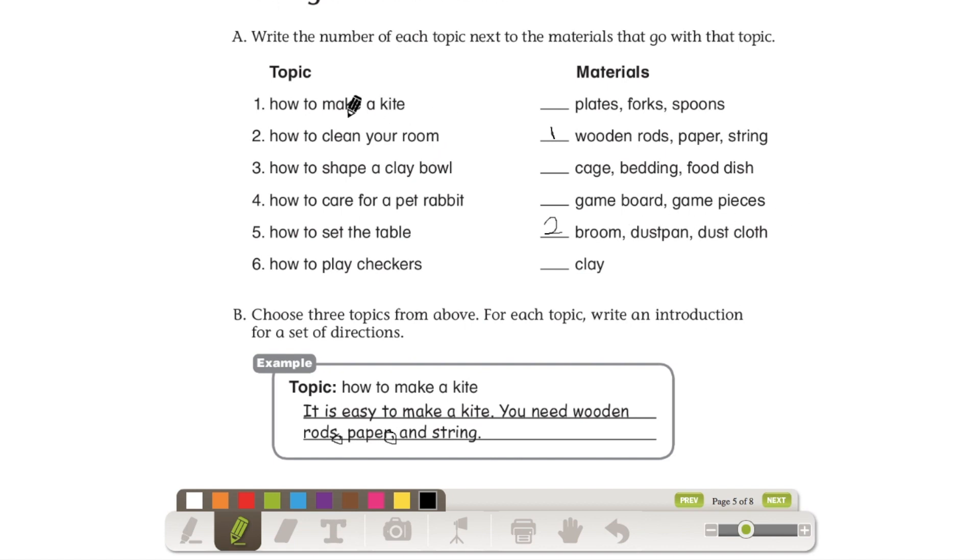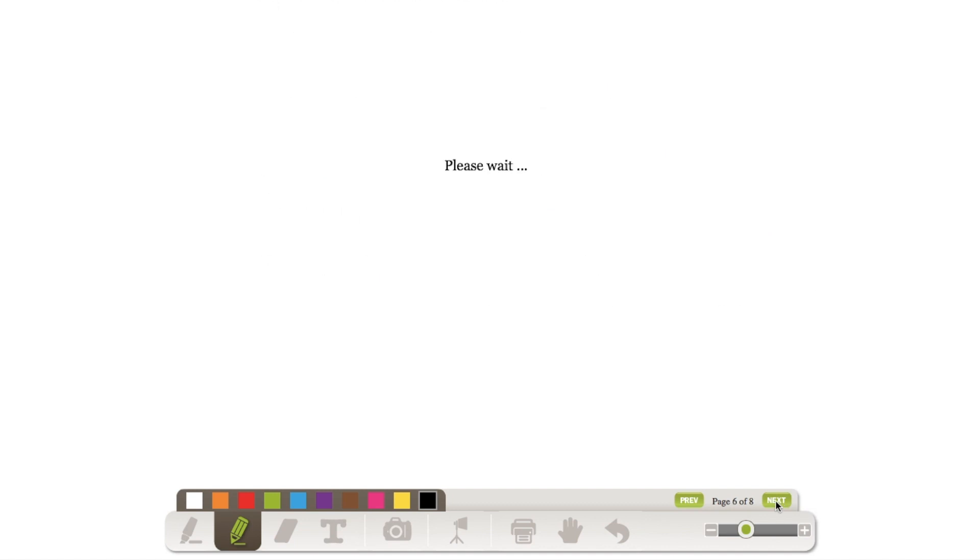Okay, so what can we write for a topic sentence for how to clean your room? We can say, do you want to know how to make your room clean and nice? All you need are a broom, a dustpan, and a dustcloth. Okay? Or I can teach you today how to clean your room. Or, cleaning your room is easy. All you need are these things.